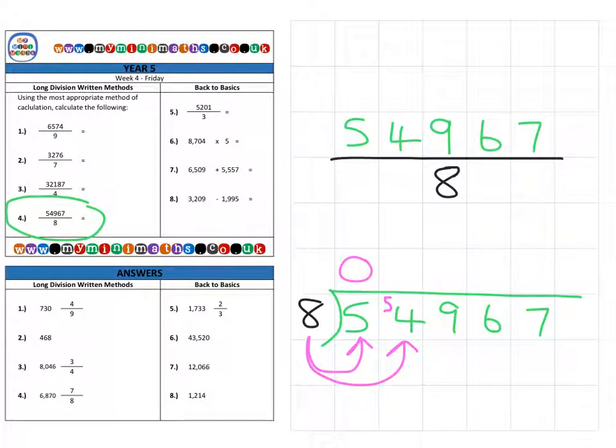So how many eights fit into 54? Well, that's going to be six. Six eights are 48. So that leaves six to be carried over to the next column. Then, how many eights fit into 69? Well, eight eights are 64. It's a square number. Eight times eight. That leaves five over for the next column.